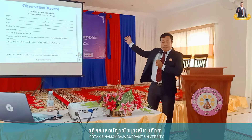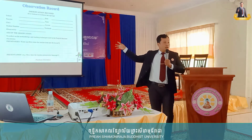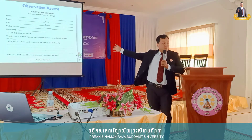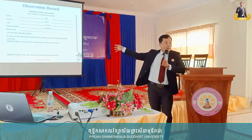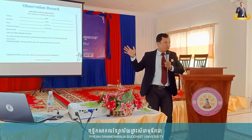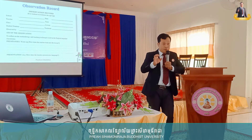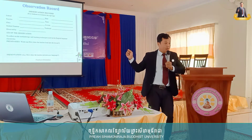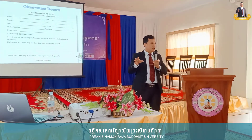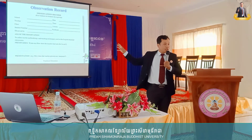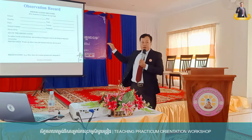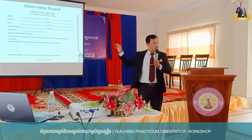When your group starts teaching, you have to copy the observation record and share it with your group members. For example, when student A teaches, students B, C, D, and E have to observe and write the record. Why do you need to write the record? As the lecturer mentioned, this record is the guide — the map — for your journal writing. If you do not have information in the observation record, you cannot write a journal.